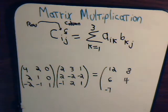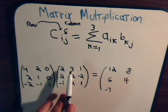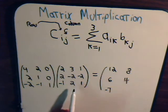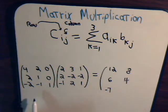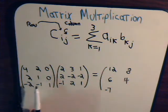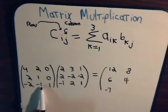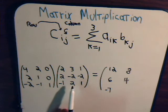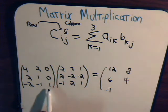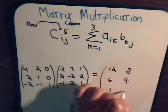We continue then with the third row and the second column. Here we have three times negative two, that's negative six, that's plus two, that's negative four, that's plus two, that leaves us with minus two.